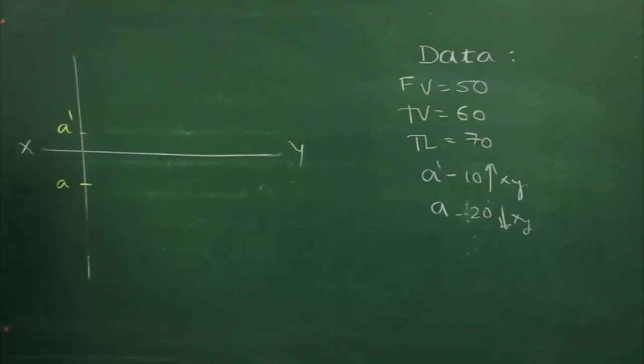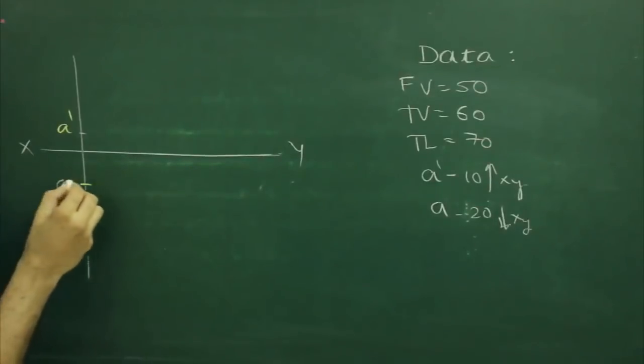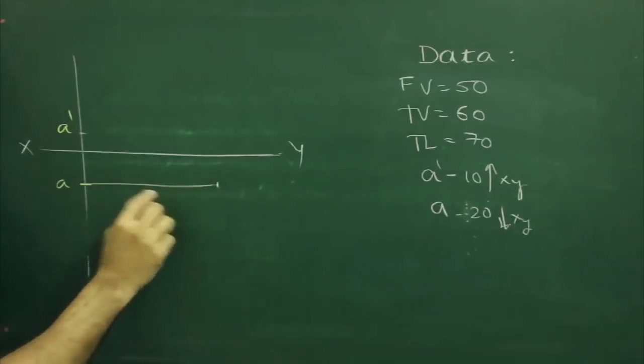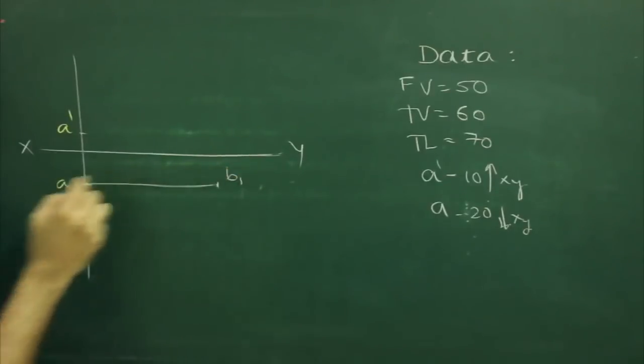After that we have given top view, that is how much? 60. So we will take 60 over here, so this is equal to top view length, a b1.